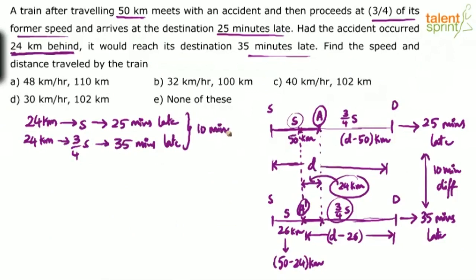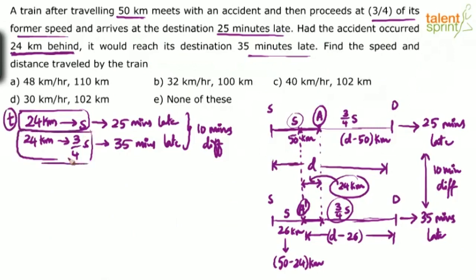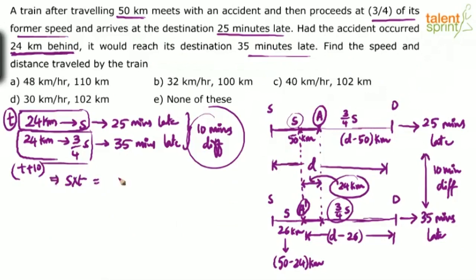Let the time taken to cover 24 kilometers at speed S be T. Then to cover the same 24 kilometers at three-fourths of S, the time taken is T plus 10 minutes. Since distance is the same: S × T = (3/4)S × (T + 10). S cancels out, giving 4T = 3T + 30, so T = 30 minutes, which equals half an hour.